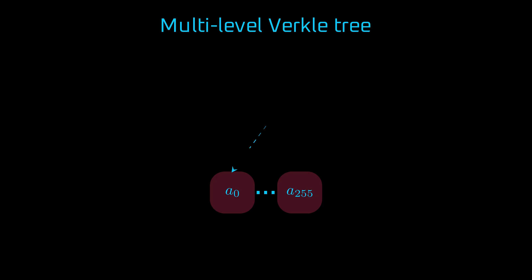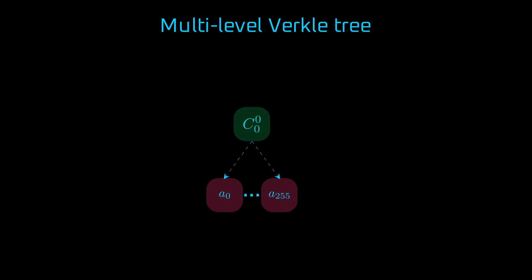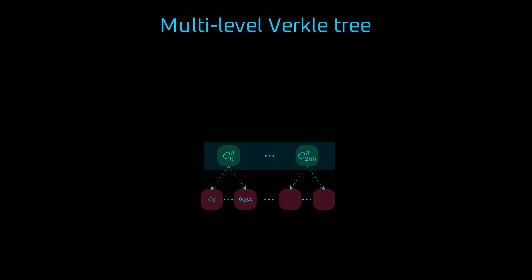And what about creating the verkle tree, which has multiple levels? Let's see how it's built. We've already started with a commitment C0 to 256 values. What we call an internal node of the verkle tree actually holds 256 such commitments, C0 through C255. Each of these is a parent to 256 values.